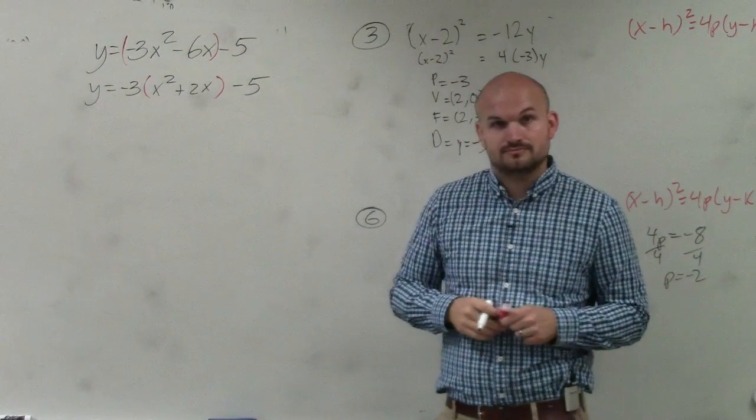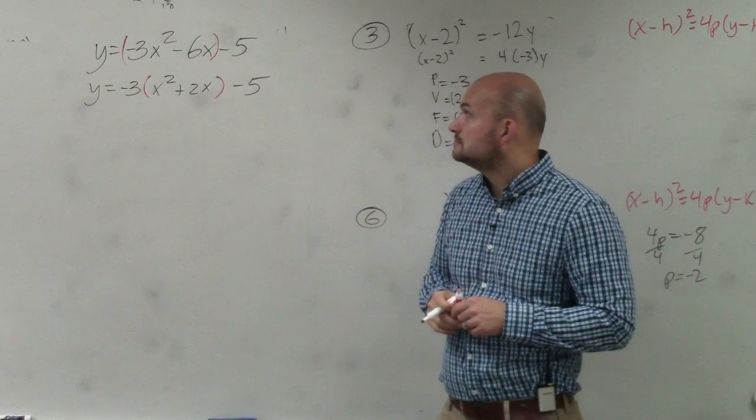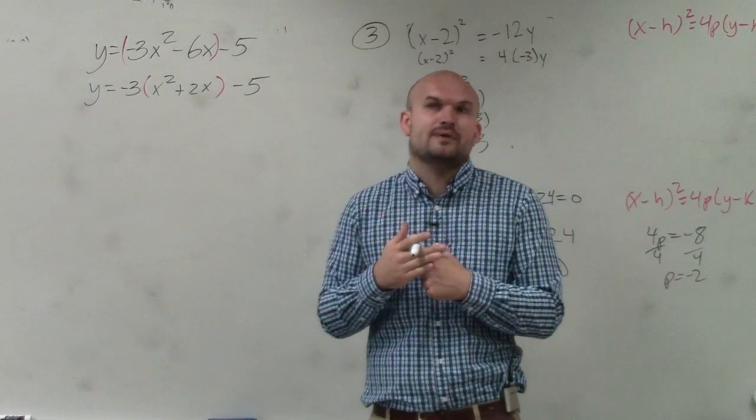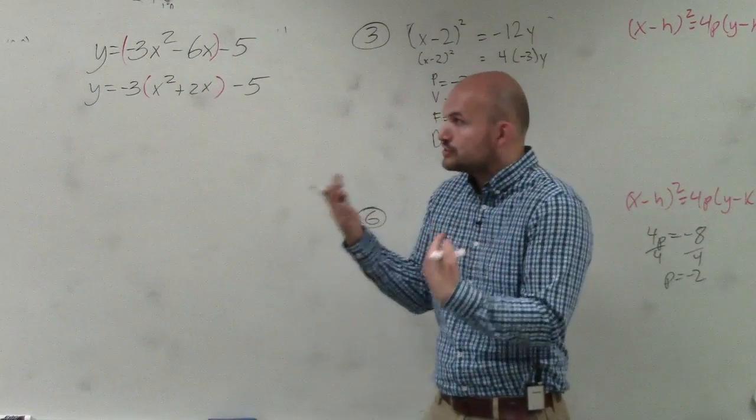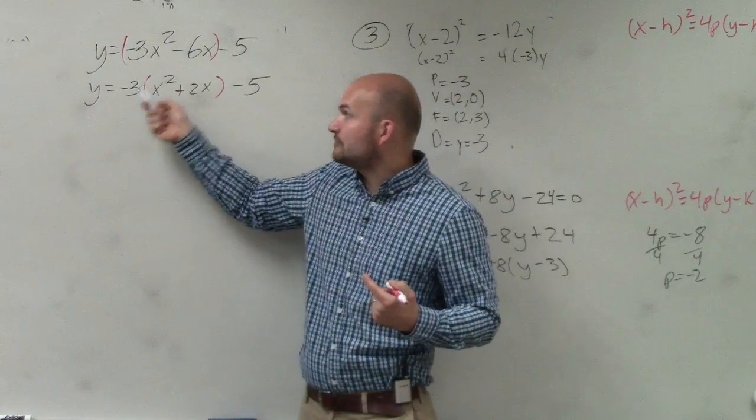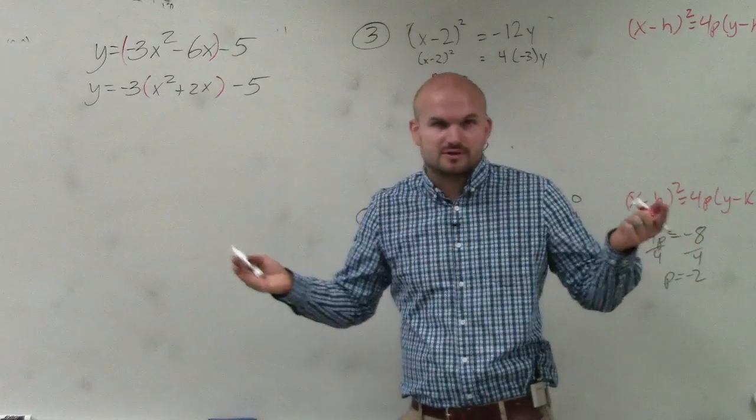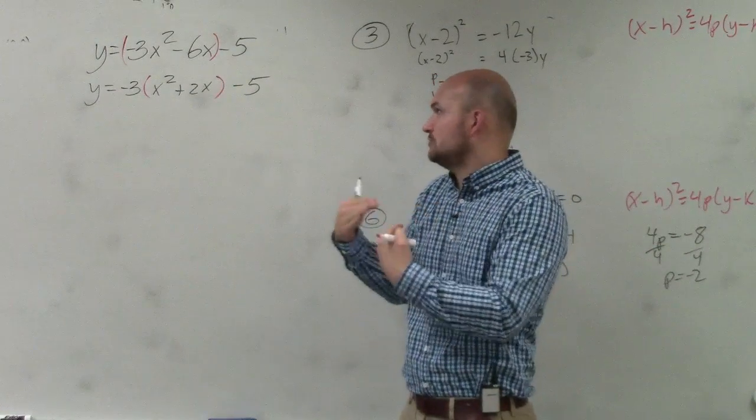So now, yes? Why wouldn't you factor out the x? Because you could. There's nothing wrong, but that's not what we're trying to do. We're not practicing factoring. The only thing we're trying to do is factor out the negative 3 so a is 1. That is our objective, just to get a equals 1. Our objective is not factoring the problem, our objective is to get a equal to 1.